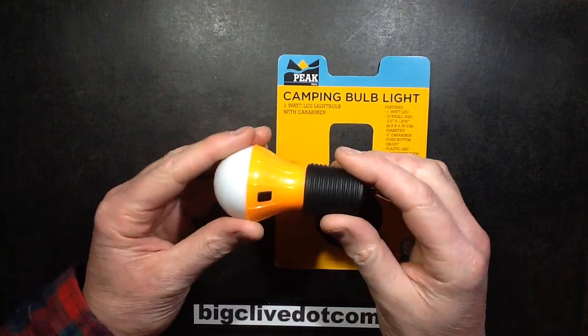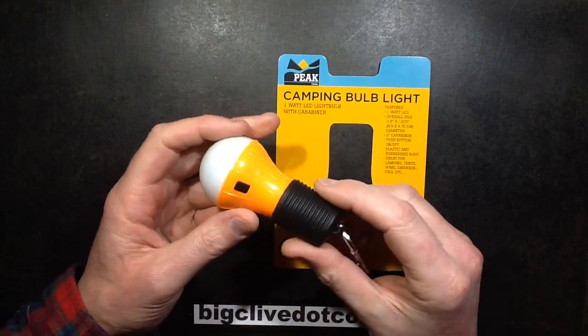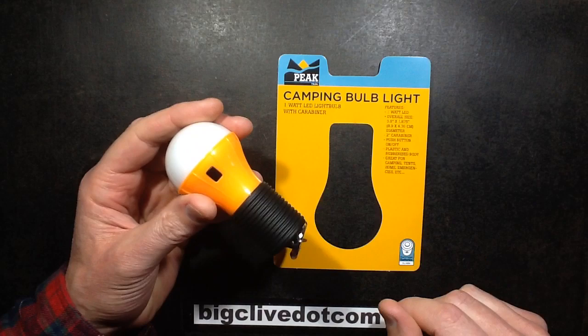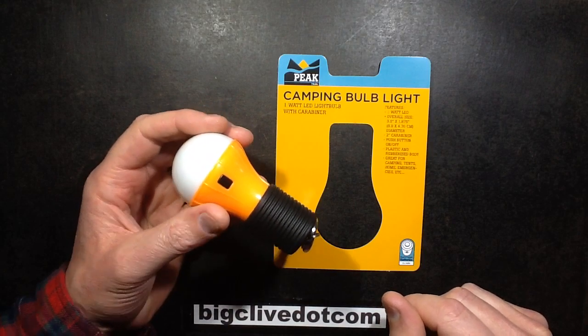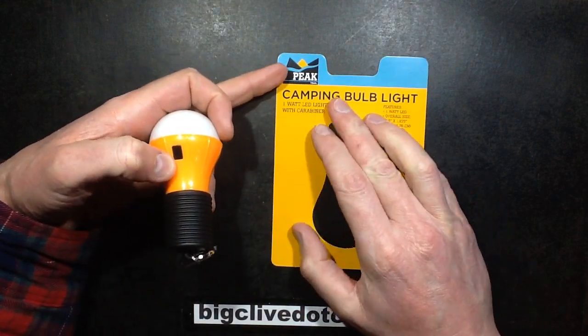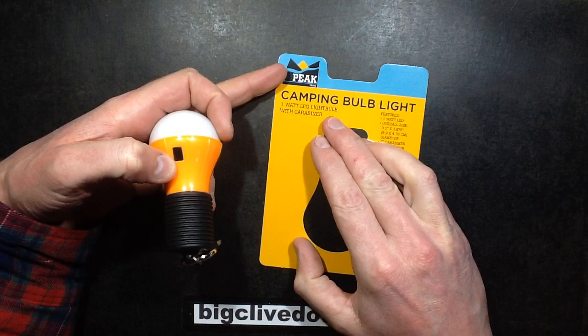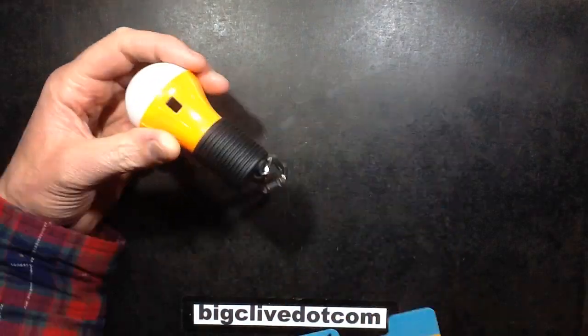Poundland is getting its summer stock for 2015 and they've just played the 1-watt LED card. So here we've got their camping bulb light with a 1-watt LED light bulb with carabiner.